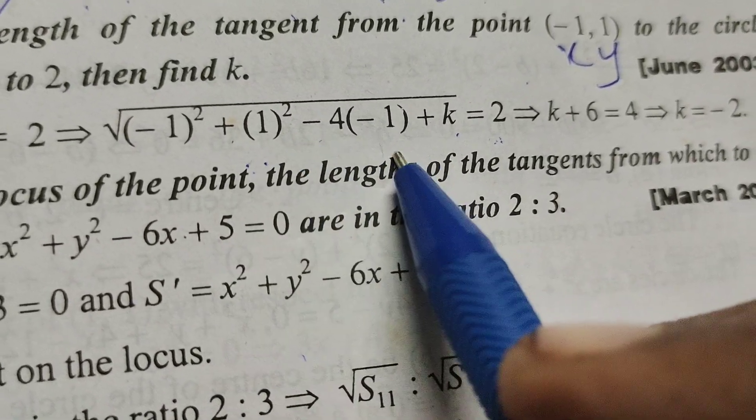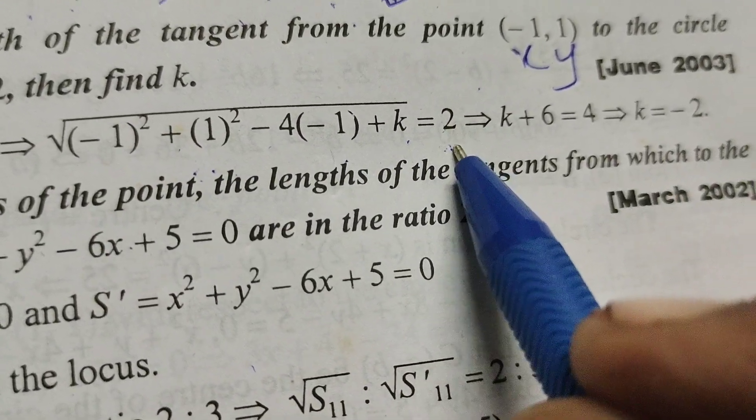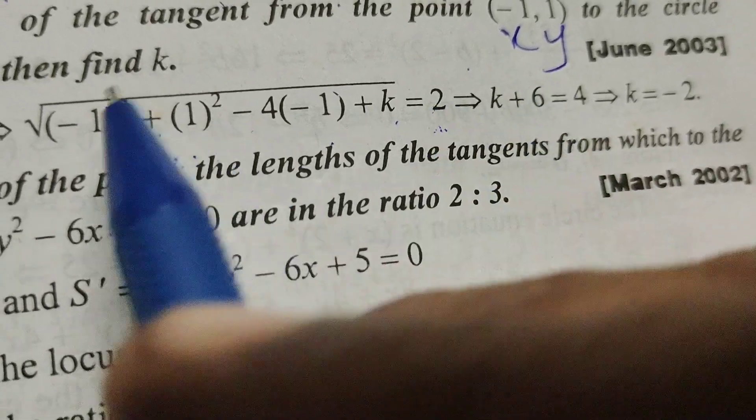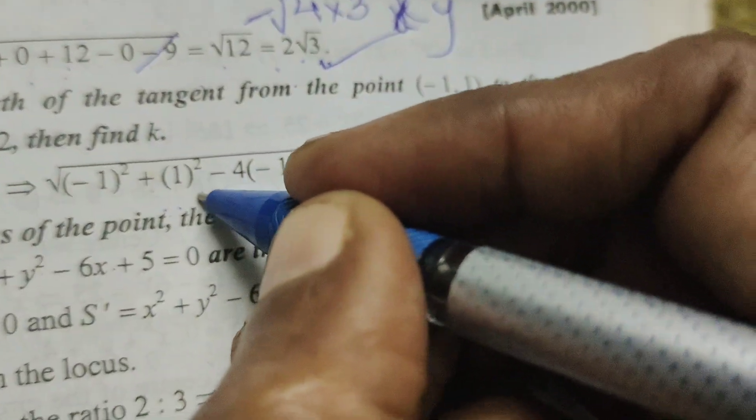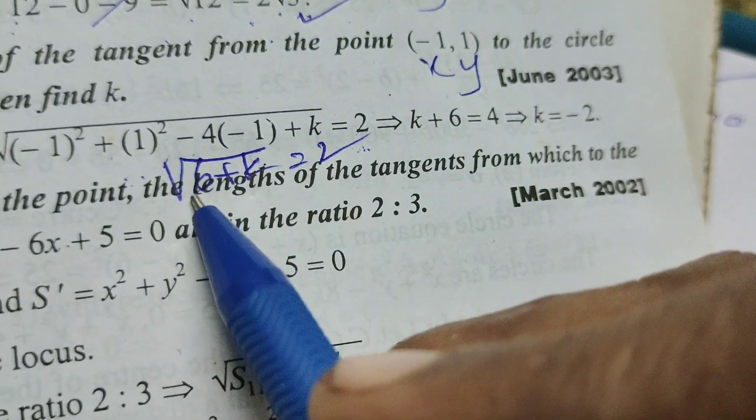8, sorry, 6, 6 plus k, root of 6 plus k equals to 2. Then root square will get cancelled.